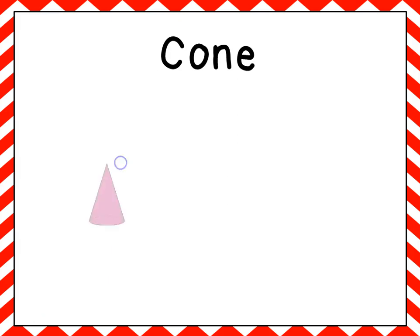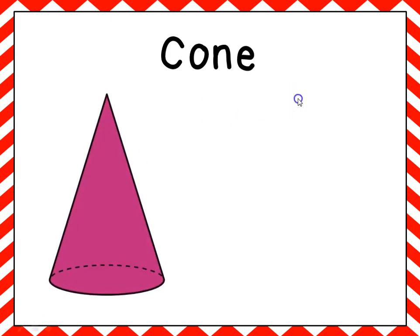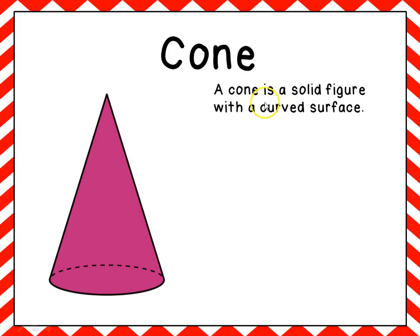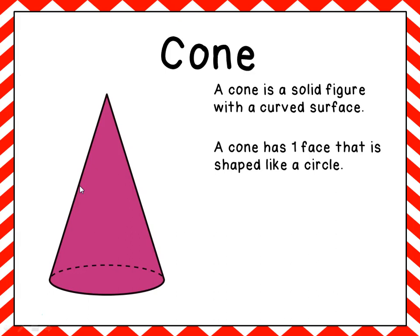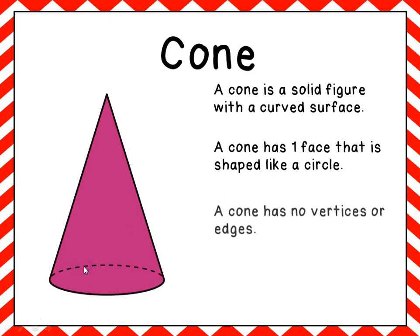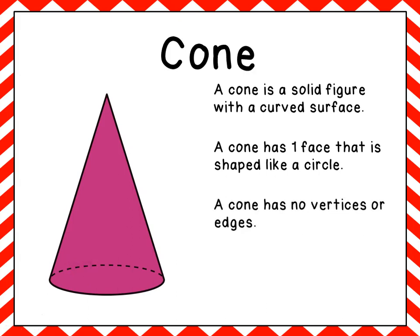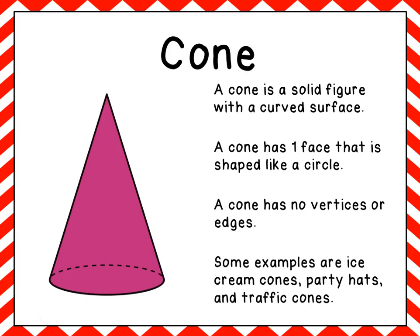Next we have the cone. A cone is a solid figure with a curved surface. A cone has one face shaped like a circle on the bottom. Because it only has one face, there are no vertices and no edges. Some examples are ice cream cones, party hats, and traffic cones.